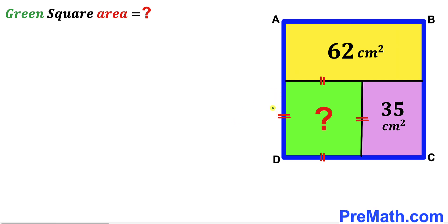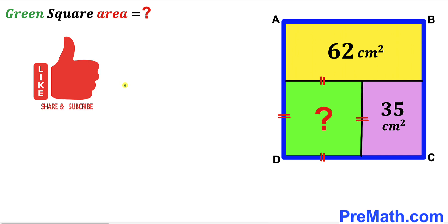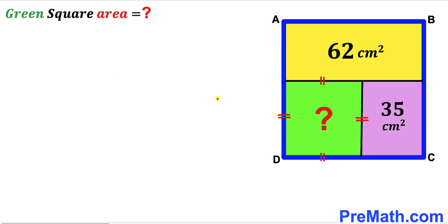Welcome to pre-math. In this video we have got a blue square ABCD that consists of two rectangles and one square, as you can see in the given diagram, such that the area of the yellow rectangle is 62 centimeter square. The area of the purple rectangle is 35 centimeter square, and our task is to calculate the area of the green shaded square. Please don't forget to give a thumbs up and subscribe, and keep in mind that this figure may not be 100% true to scale.